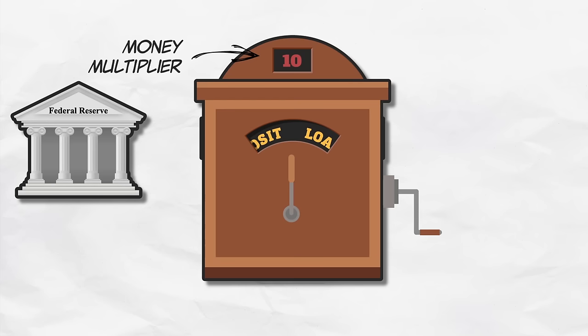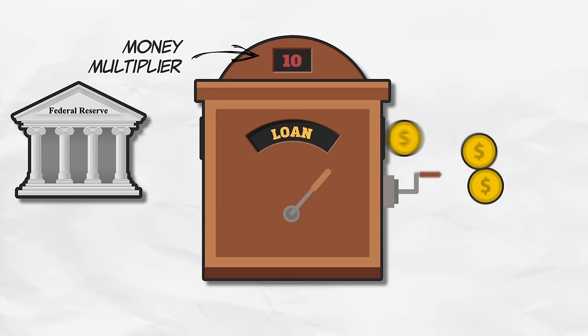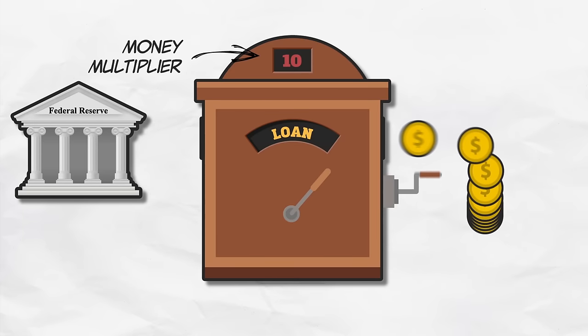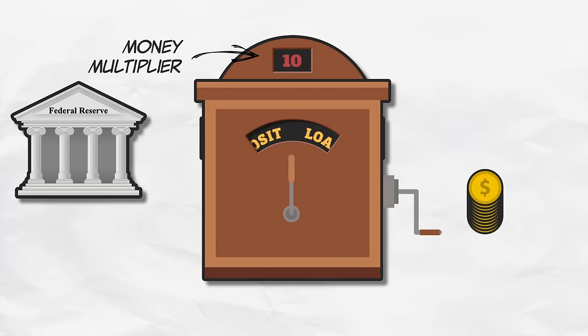But the Fed's control over the money supply process is indirect. If banks hold the minimum amount of required reserves — 10%, as we assumed earlier — then the money multiplier will be close to 10. And if this is the case, the Fed will have a lot of leverage to move M1 and M2 with a small change in reserves.